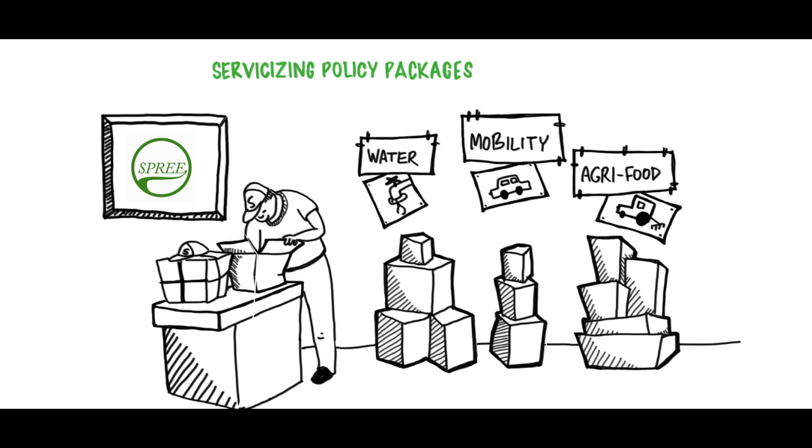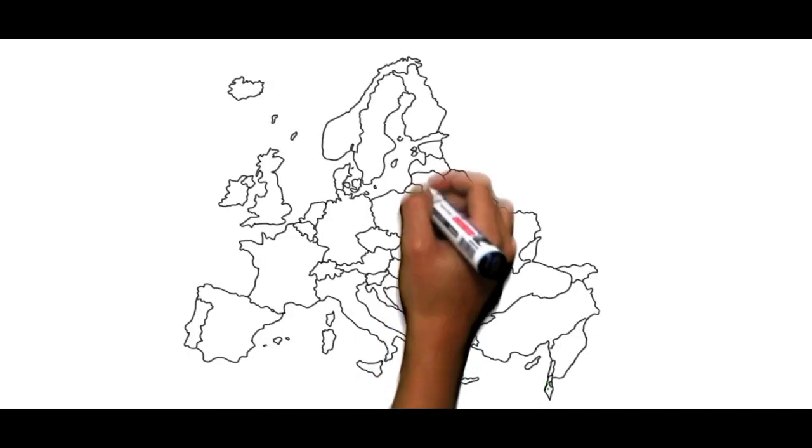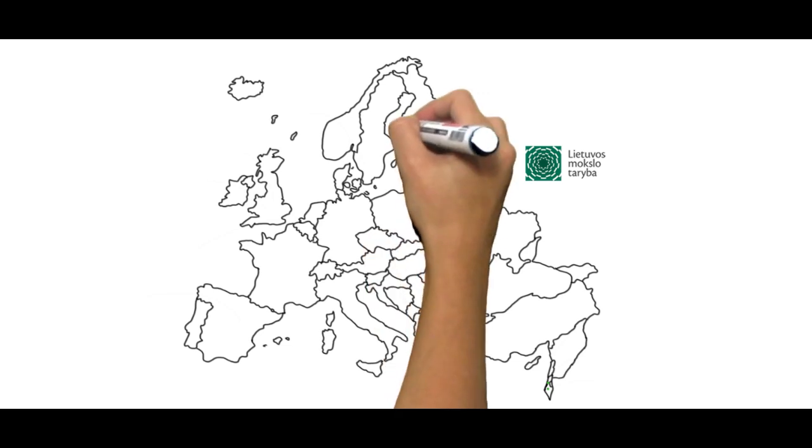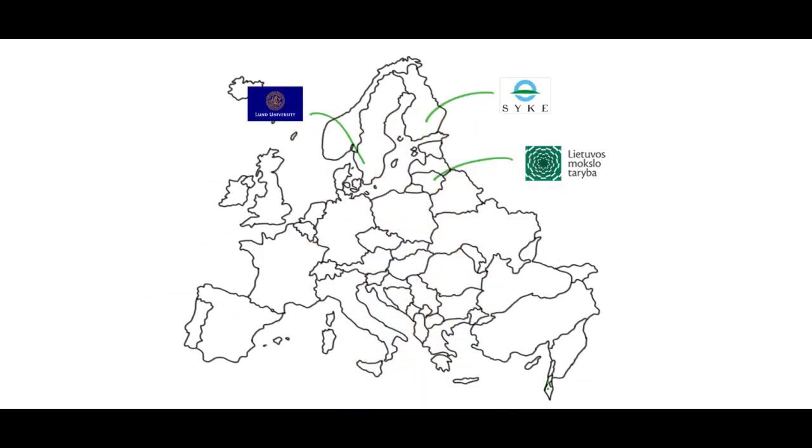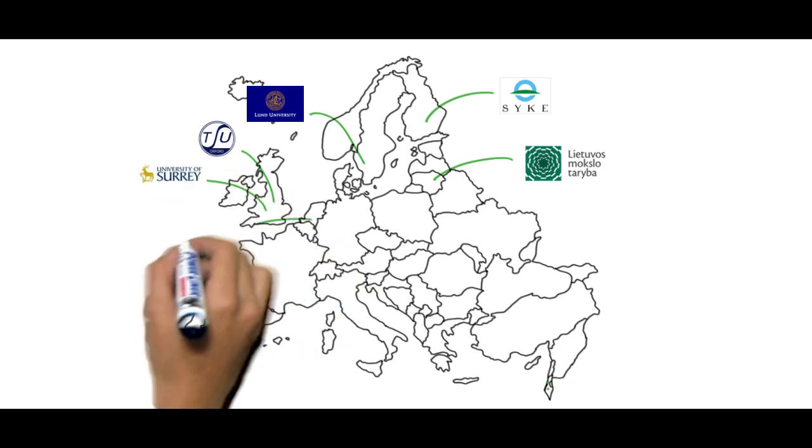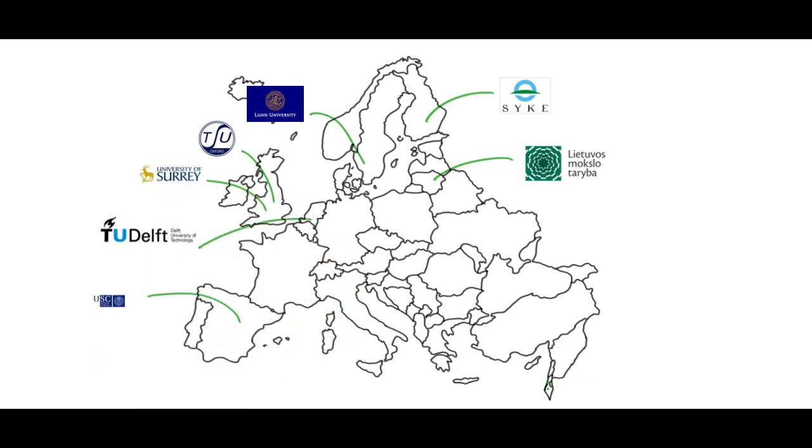SPRE International Consortium consists of 10 partners from seven different European member states and associated countries: The Research Council of Lithuania, the Finnish Environment Institute, Lund University, Oxford University, Saare University, Delft University of Technology, University of Santiago de Compostela, the Jerusalem Institute for Israel Studies, Tel Aviv University, and Ben Gurion University.